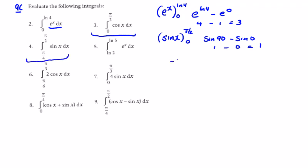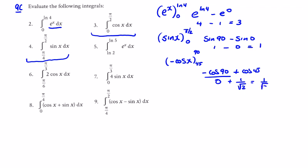For number 4, sin x integrates to minus cos x. So we have minus cos x evaluated between 90 and 45. That gives minus cos of 90, minus minus cos of 45. Cos of 90 is 0 and cos of 45 is 1 over root 2, so we get 1 over root 2.